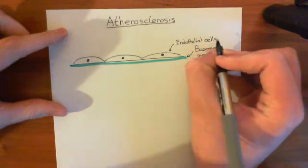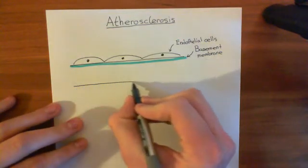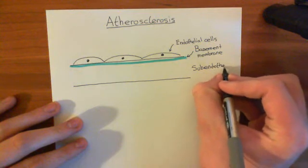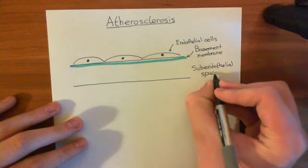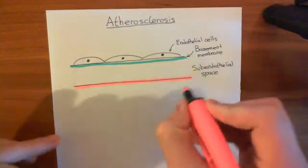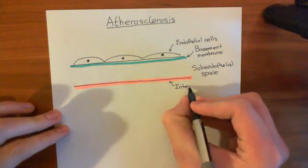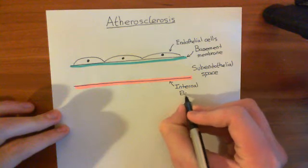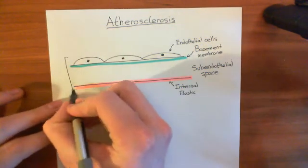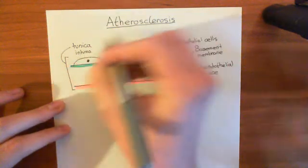Underneath the basement membrane, you have a portion known as the subendothelial space, which is full of connective tissue — sometimes referred to as the subendothelial connective tissue. And then at the bottom, in red, this is the internal elastic lamina before you go on to where the smooth muscle cells are. All of these layers together make up the tunica intima. Tunica means layer, intima means close, because it's the layer closest to the blood in the centre.